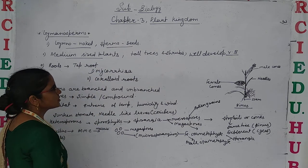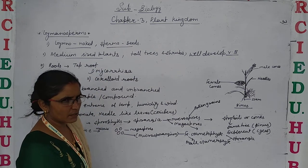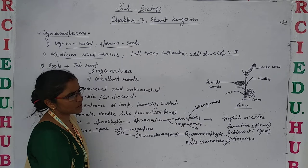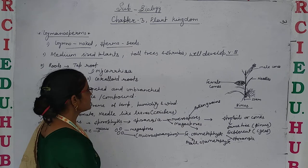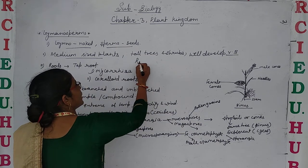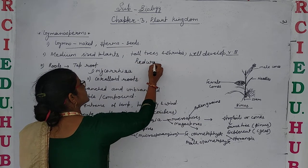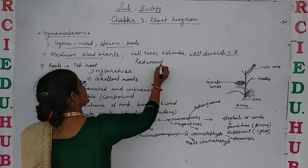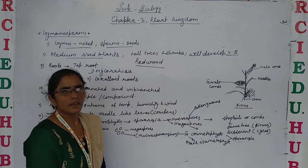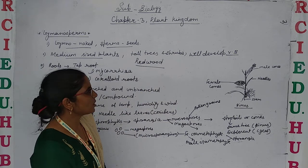Gymnosperms contain mainly medium-sized plants, tall trees and shrubs. For example, the redwood plant, which is the tallest, is present in the gymnosperms.